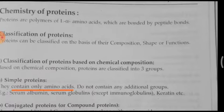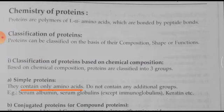Now moving to the chemistry of proteins. Proteins are polymers of alpha amino acids bonded by peptide bonds. Usually, alpha amino acids are involved in the formation of proteins and they are linked by peptide bonds. When the number of amino acids crosses more than 100, it is called a protein.